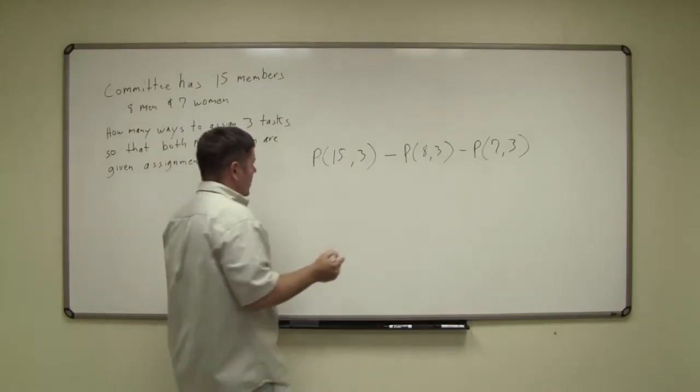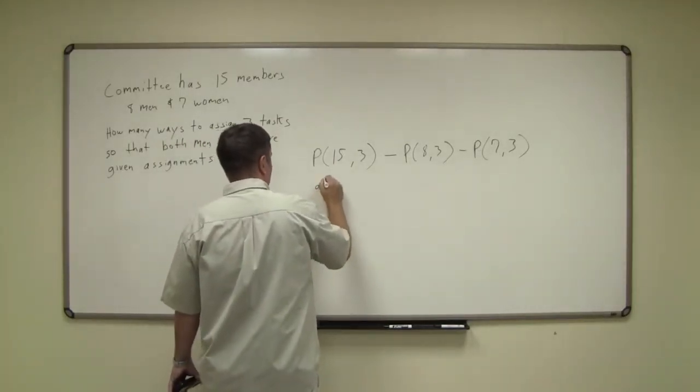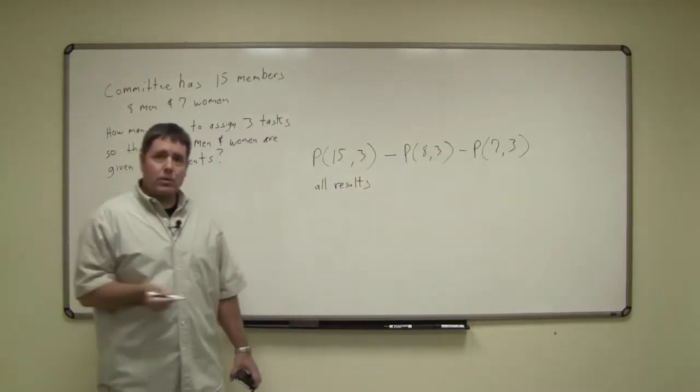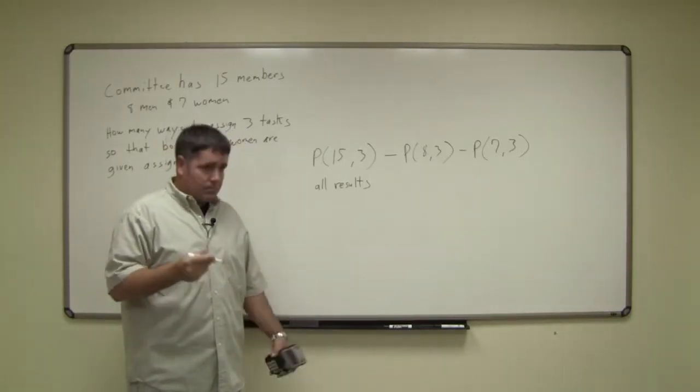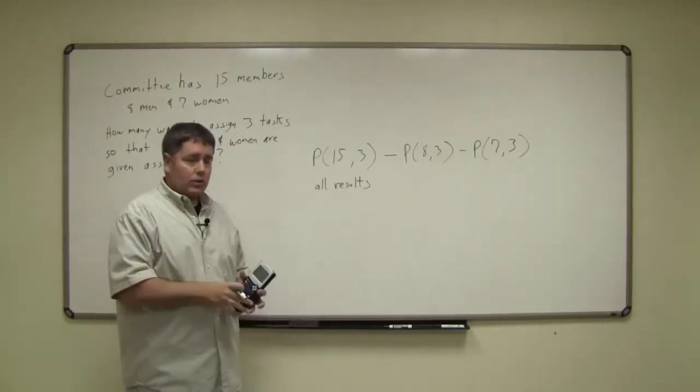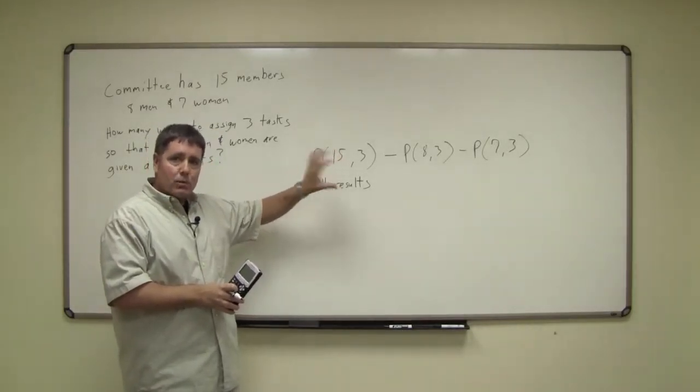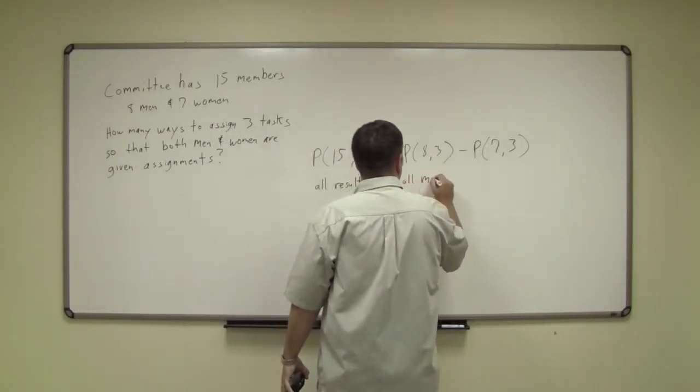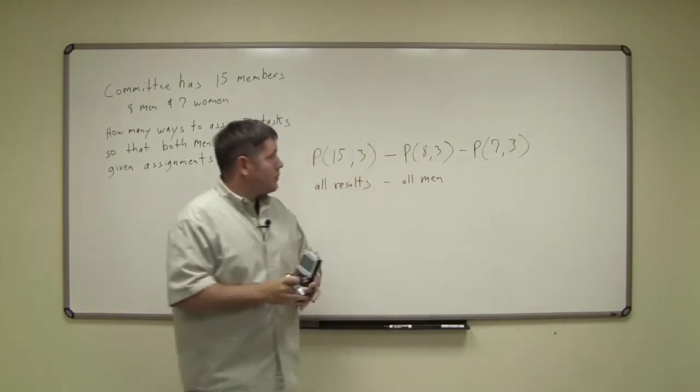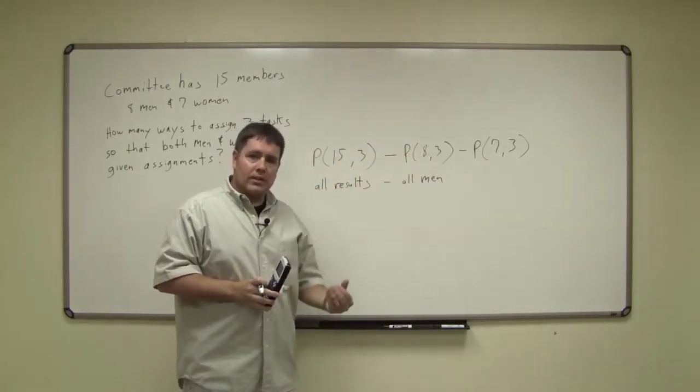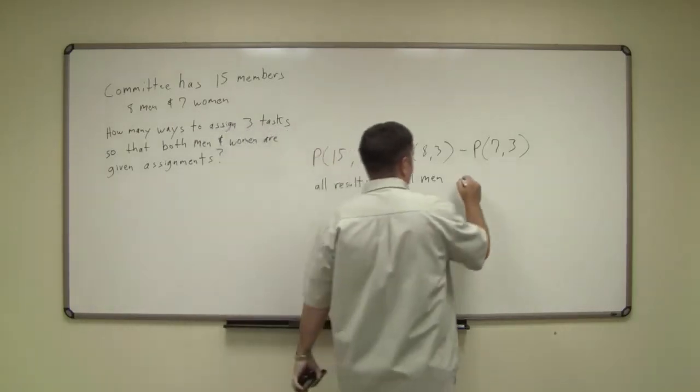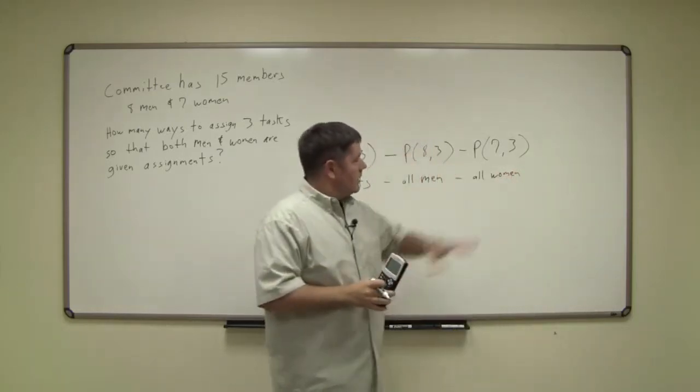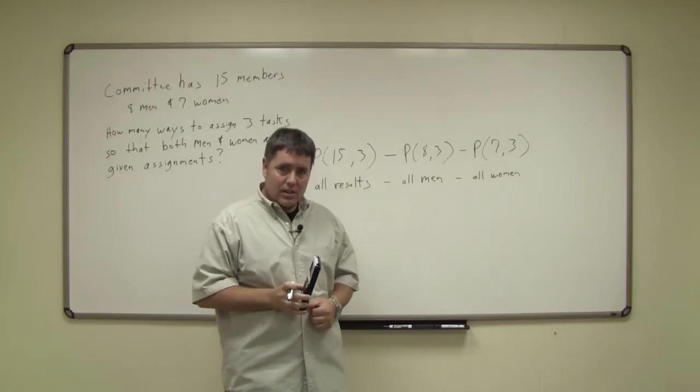Let's be clear about what we've done here. Our first permutation gets us all the possible results without respect to whether we got men or women. This is every possible result that could happen. The second permutation represents all men filling the tasks. The third permutation tells you that all women have filled the tasks.